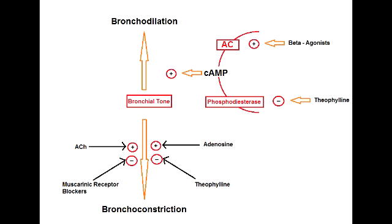Theophylline has two different mechanisms of action. First, it inhibits phosphodiesterase. As shown in the picture on your screen, phosphodiesterase is being blocked, therefore there is a decrease in the hydrolysis of cyclic AMP. This means there is an increase in the amount of cyclic AMP, leading to bronchodilation.